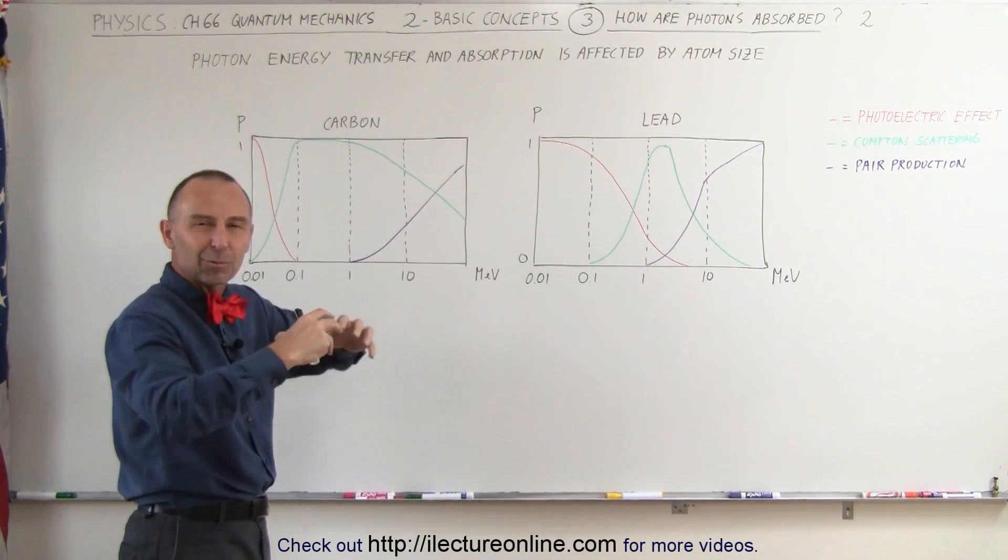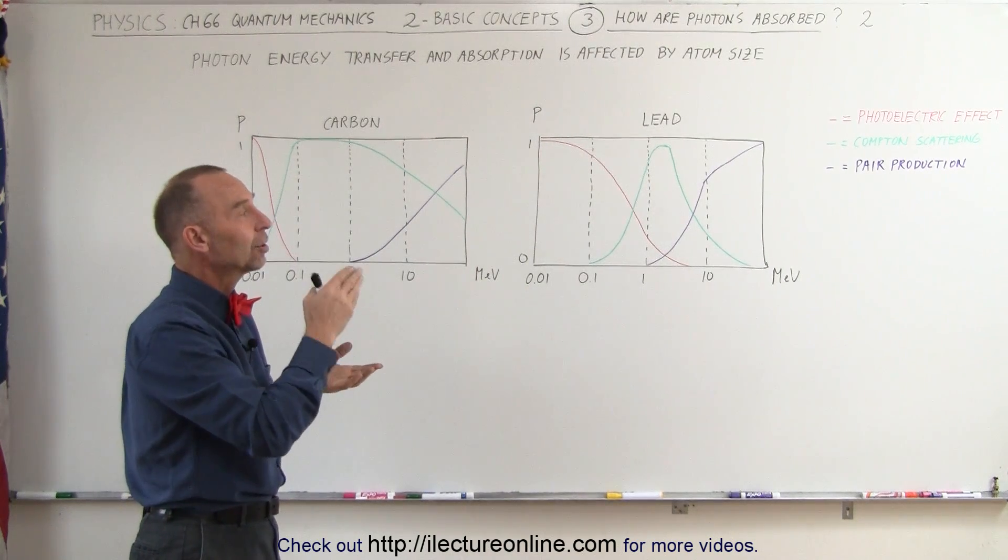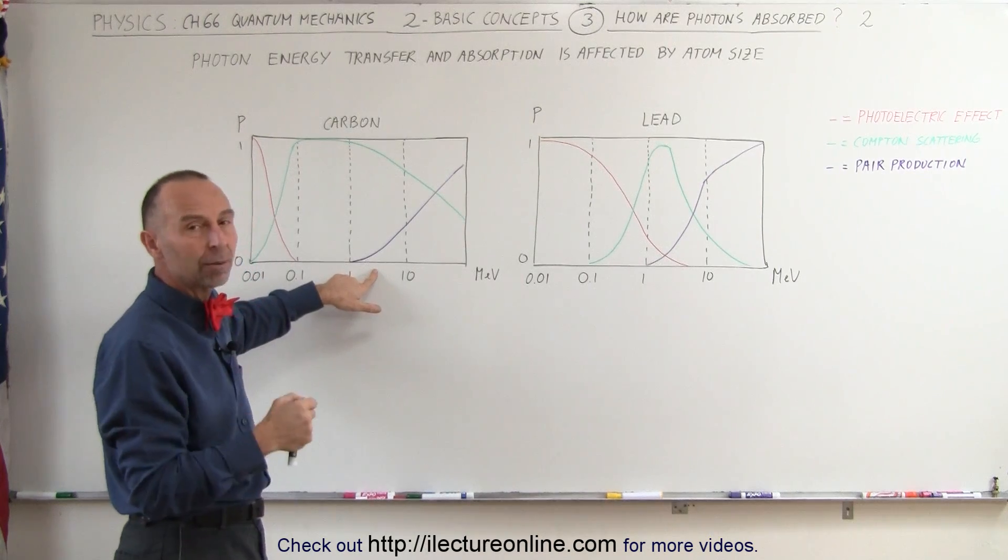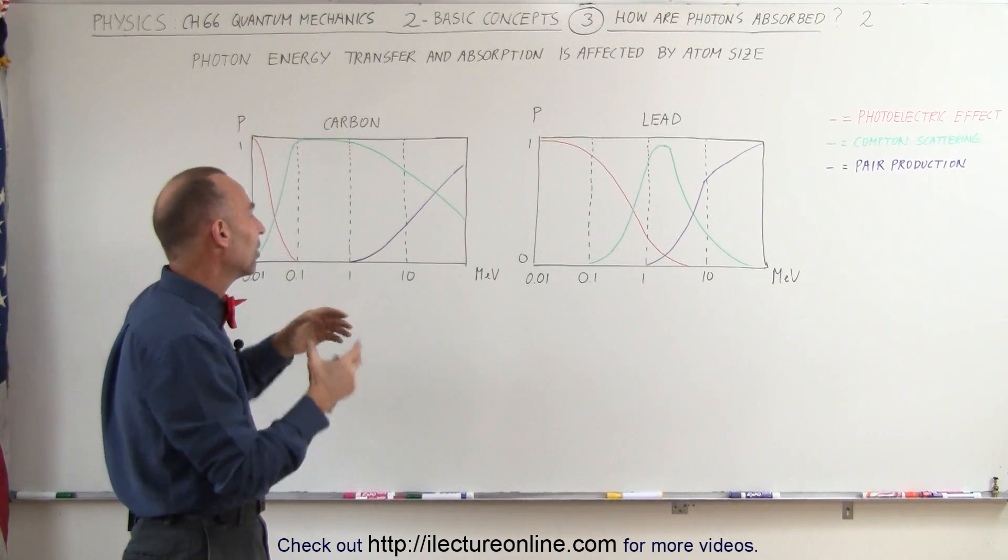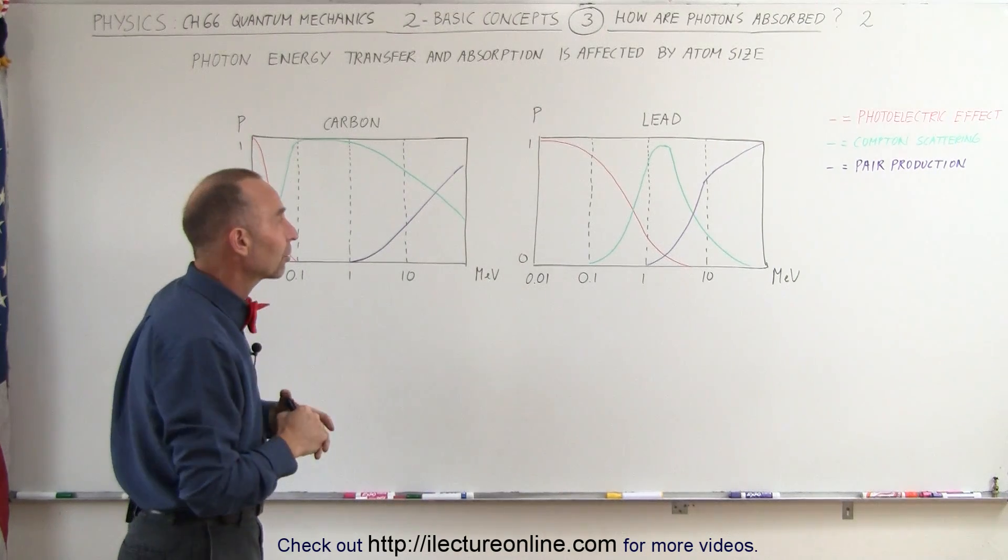So it does seem like lead acts more like a brick wall, so to speak, to the photons causing them to more likely turn into a pair production event than for the smaller carbon atoms who don't have as much mass and are not as able to affect the photons in a way to cause them to do pair production.